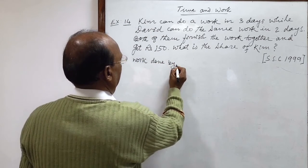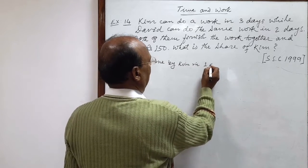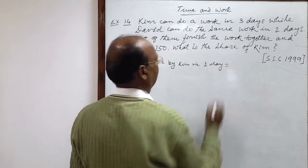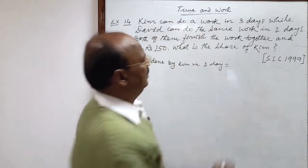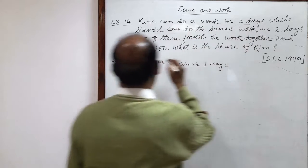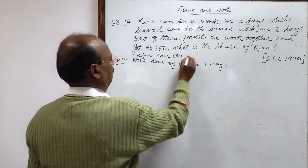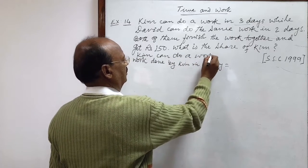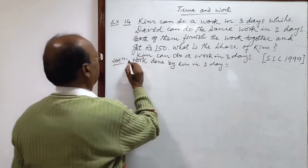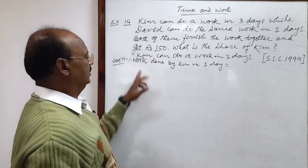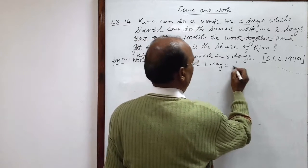Work done by Kim in one day will be how much? We are given that Kim can do a work in three days. Therefore, by unitary method, work done by Kim in one day will be one by three (1/3).